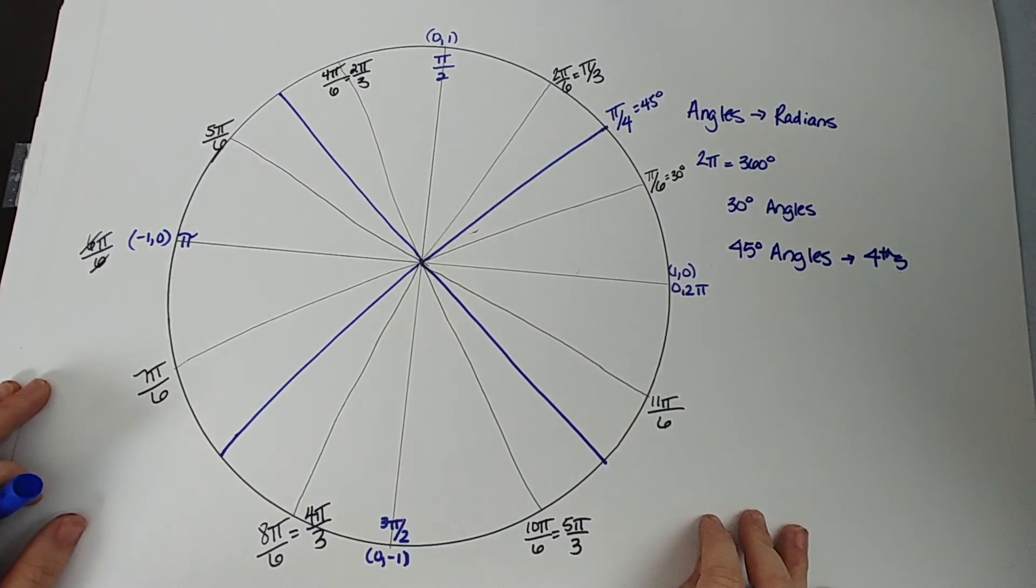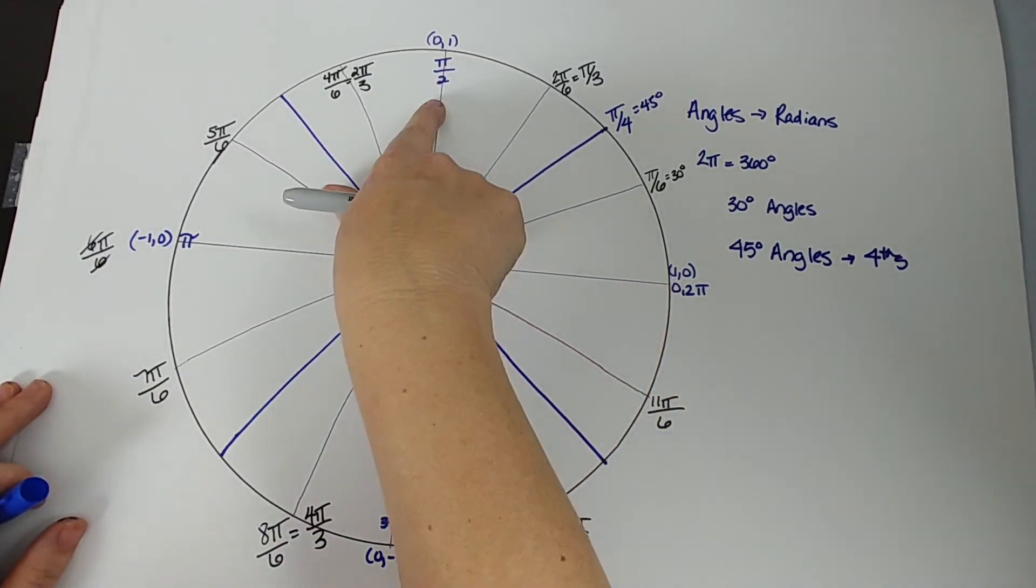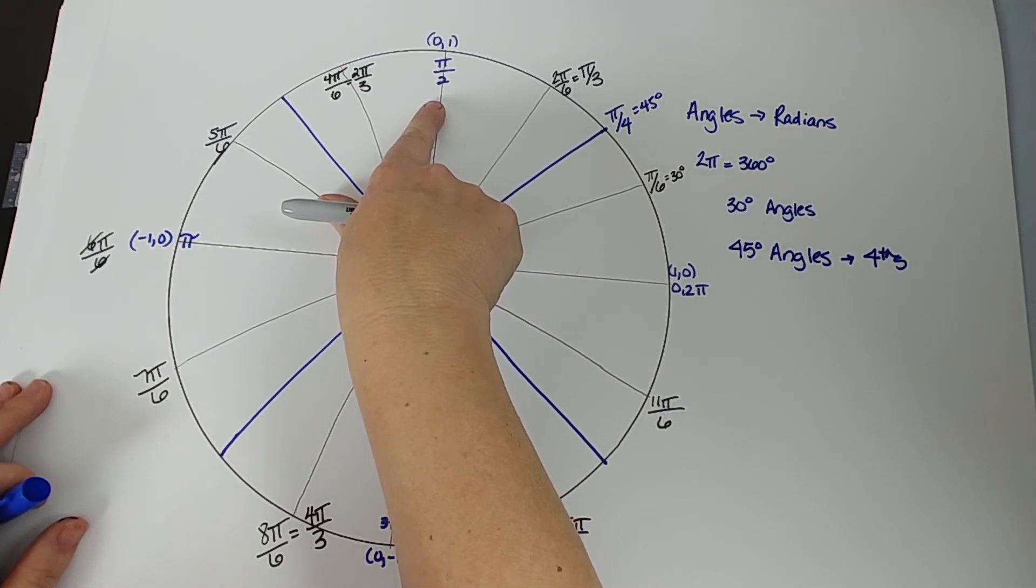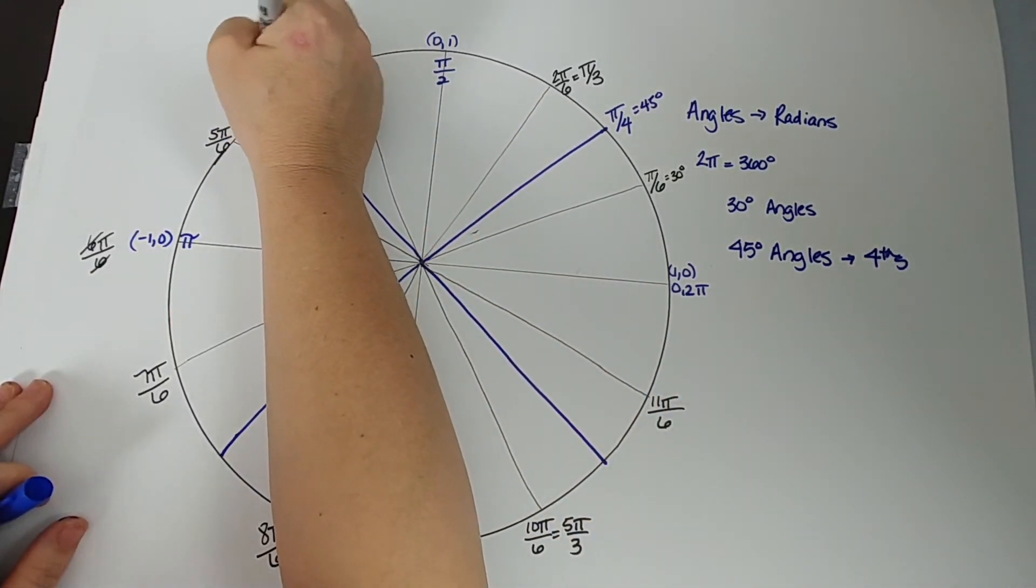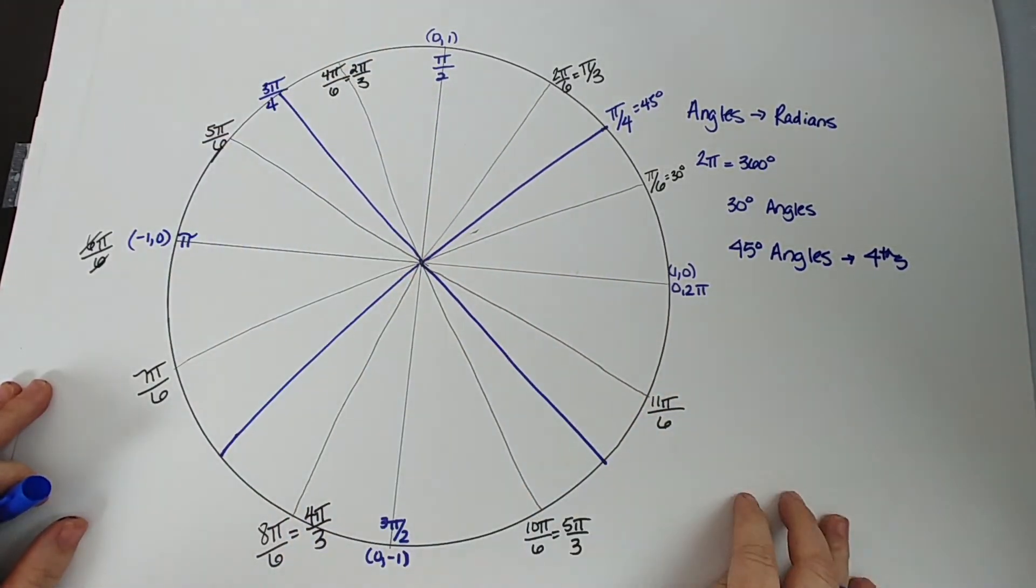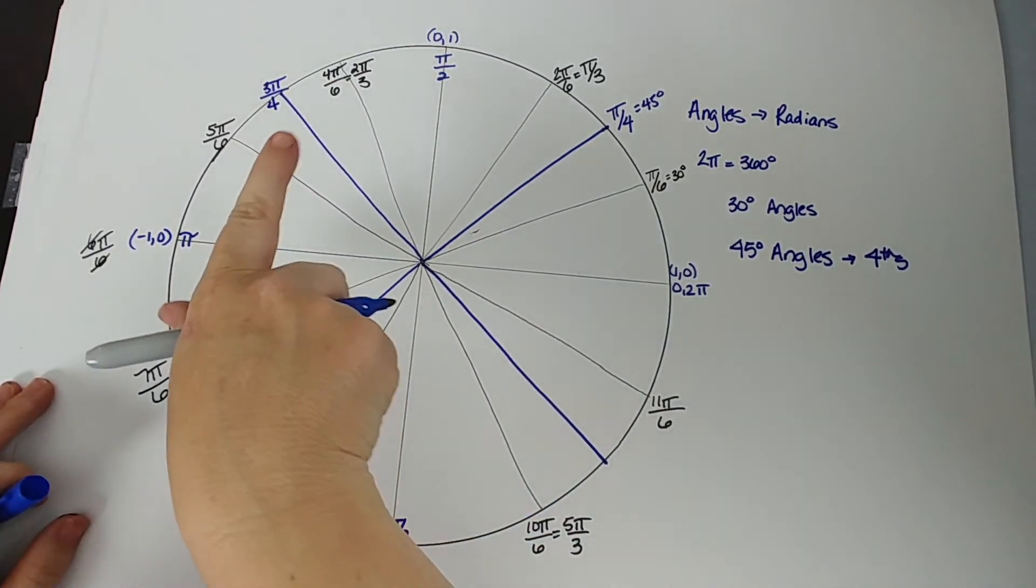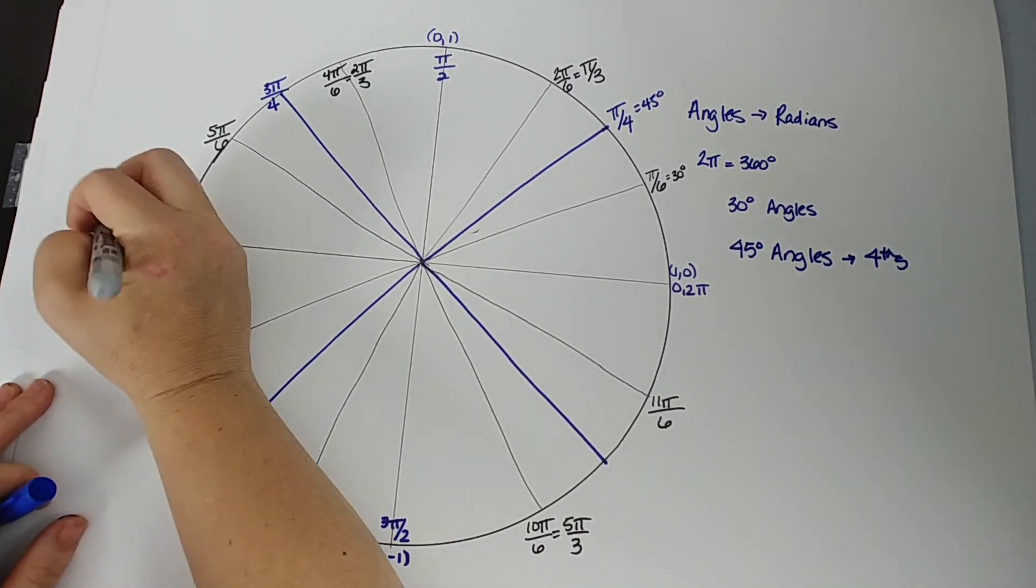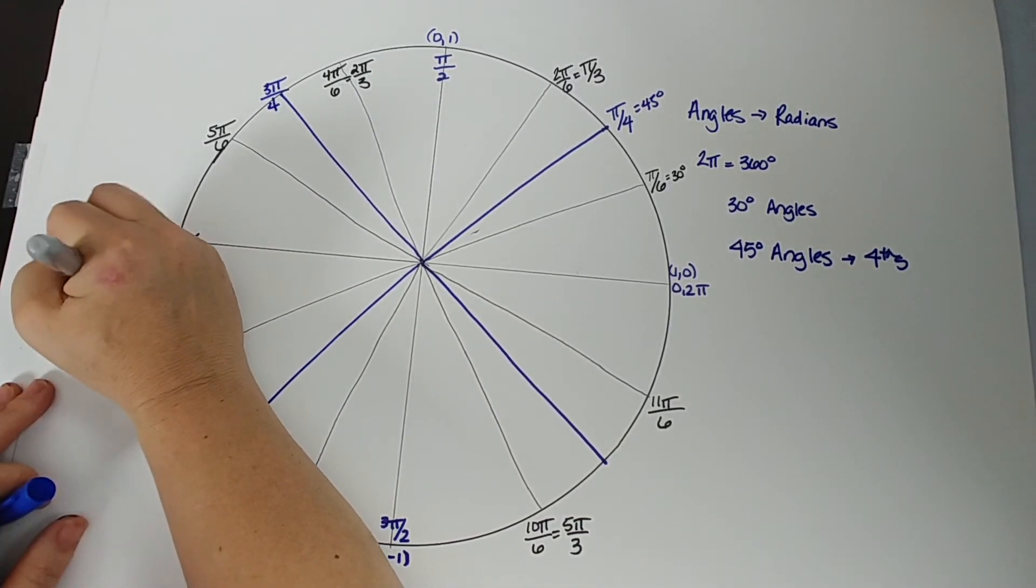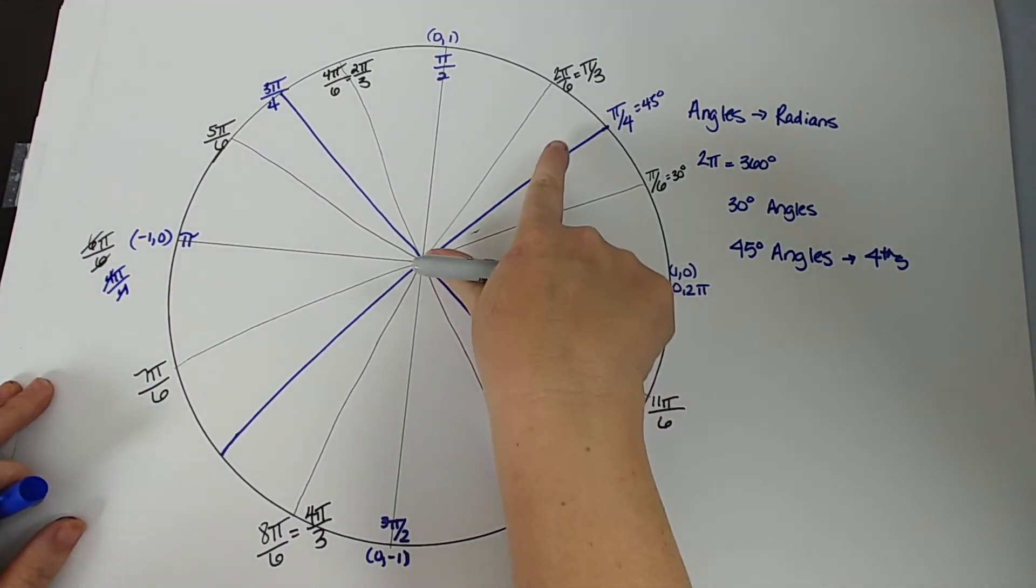So same idea here. This is going to be one-fourth π or π/4. And that is our 45 degrees. And then we're going to keep counting in multiples of 45 degrees. So one π/4, two π/4 is still one-half. So 90 degrees is going to stay, and it's good that it works out for both. Otherwise, something would be wrong. So one, two, this is going to be 3π/4. This is going to be 4π/4. So 4π/4 is still, you know, π, right?